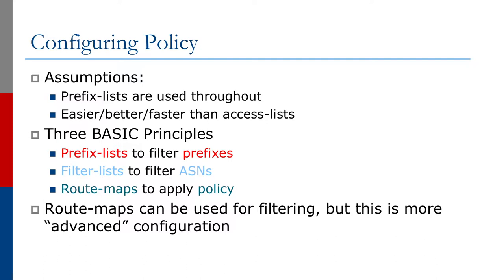This section is going to look at how we go about configuring policy within BGP for the multi-homing examples that we will be discussing going forwards. There are several different scenarios and we're going to look at the policy language we use in Cisco IOS to demonstrate how these examples are implemented. We're going to use prefix lists throughout for filtering prefixes, Cisco's filter lists for filtering announcements based on AS numbers, and Cisco IOS route maps to apply policy.